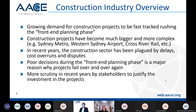In the construction industry overview, there is a growing demand for construction projects to be fast-tracked, rushing the front-end planning. Especially now during COVID, governments have been pushing to fast-track very large infrastructure projects. Projects are becoming much bigger and more complex — here in Australia alone we can see multi-billion dollar infrastructure projects like Sydney Metro, West Sydney Airport, and Cross River Rail, where multiple players need to make decisions at the early stage with a lot of uncertainty.